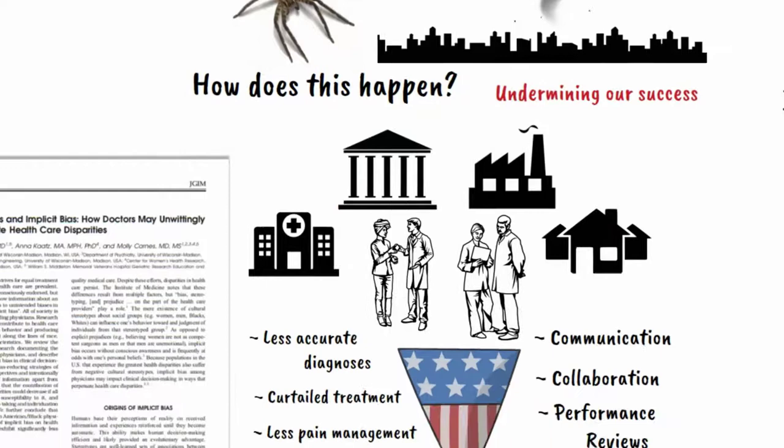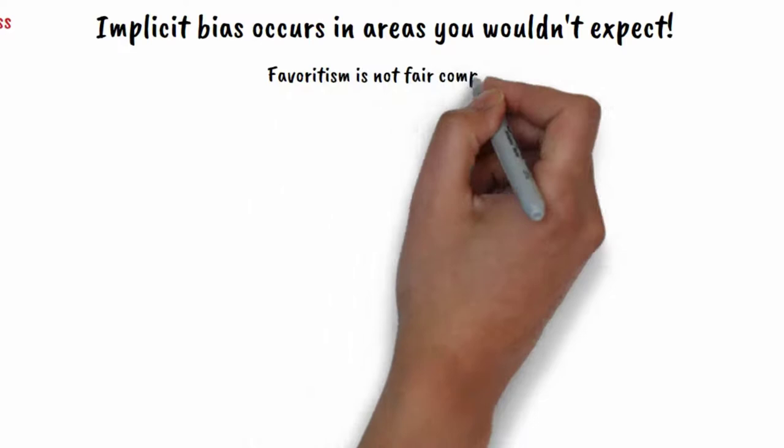By unfairly biasing our choices, we are promoting unjust behavior that can impede success, such as in the sciences, because the best person for the job was not actually selected due to favoritism based on arbitrary qualities.